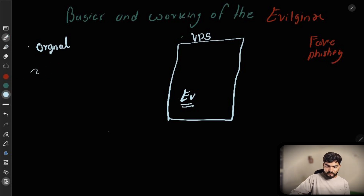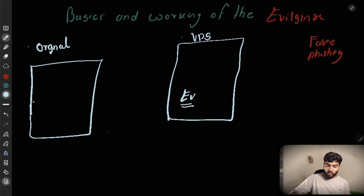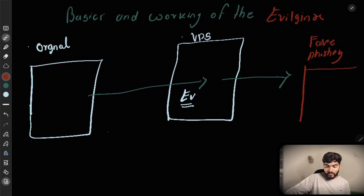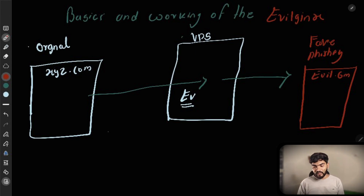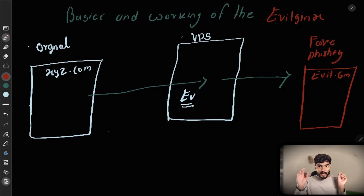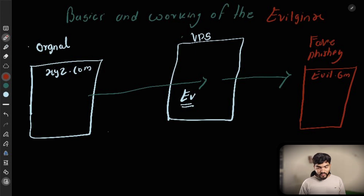What EvilGinx does is it takes the original website, creates the phishing version of that website, and gives us that phishing website. So if the original website is on xyz.com, we can use EvilGinx to create the phishing website and host it on our own domain — for example, evil.com. The original website and the phishing website will look exactly the same; the user will not be able to differentiate between them.